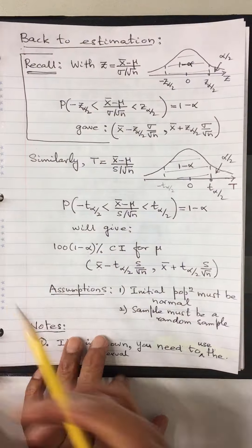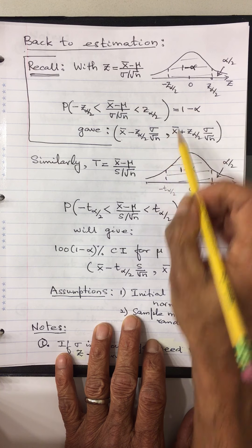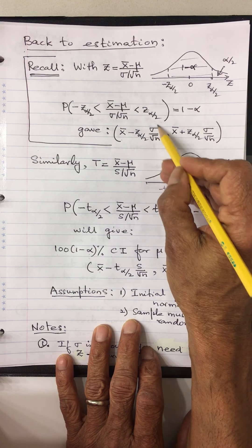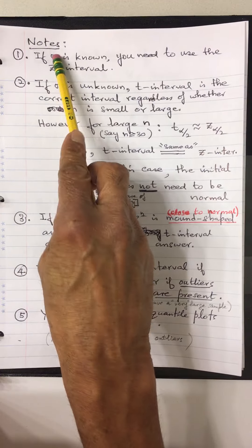A couple of notes. Note 1: if σ is known, you need to use the z-interval. If σ is known, you have no business replacing σ by s — s is just an estimate for σ. So if you already know σ, you should not use the t-interval. Use the z-interval, which is what we did in the very beginning.